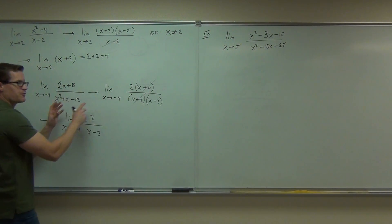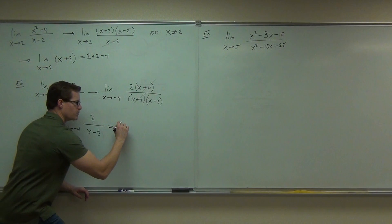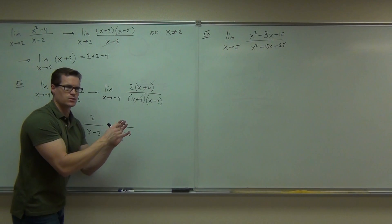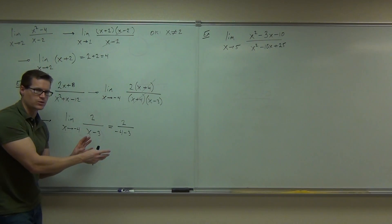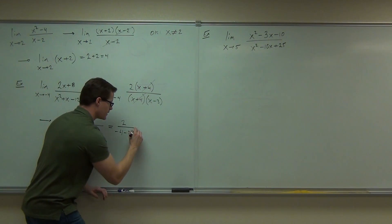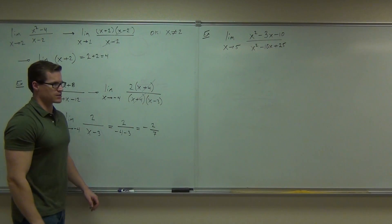Notice how I've written limit, limit, factored limit still, and now I can put, well this is going to equal 2 over negative 4 minus 3. I've now evaluated my limit. I don't write the limit notation any longer because I don't have any more variables. As soon as you substitute for your variable, that is your limit. I get negative 2 sevenths as our limit.